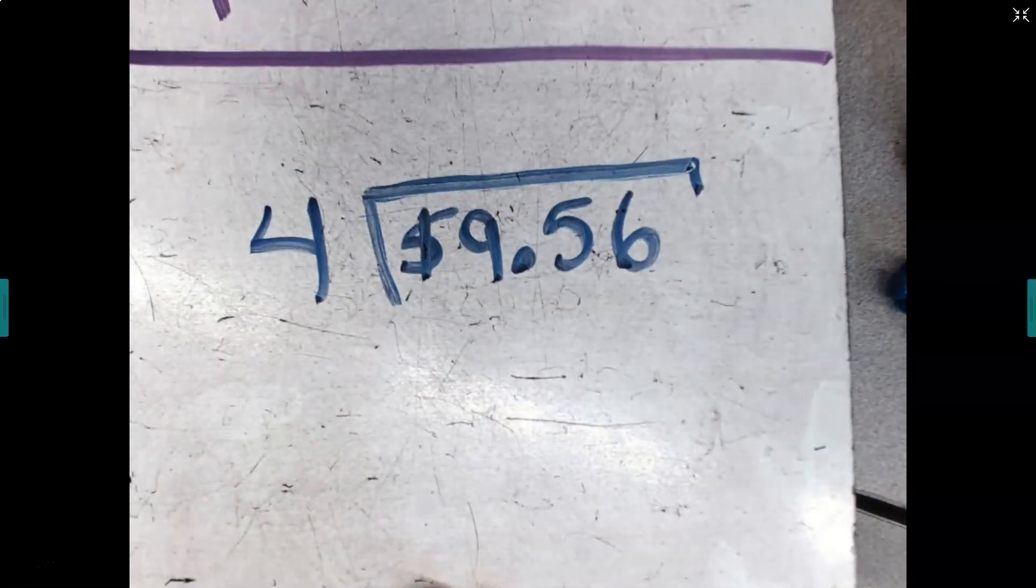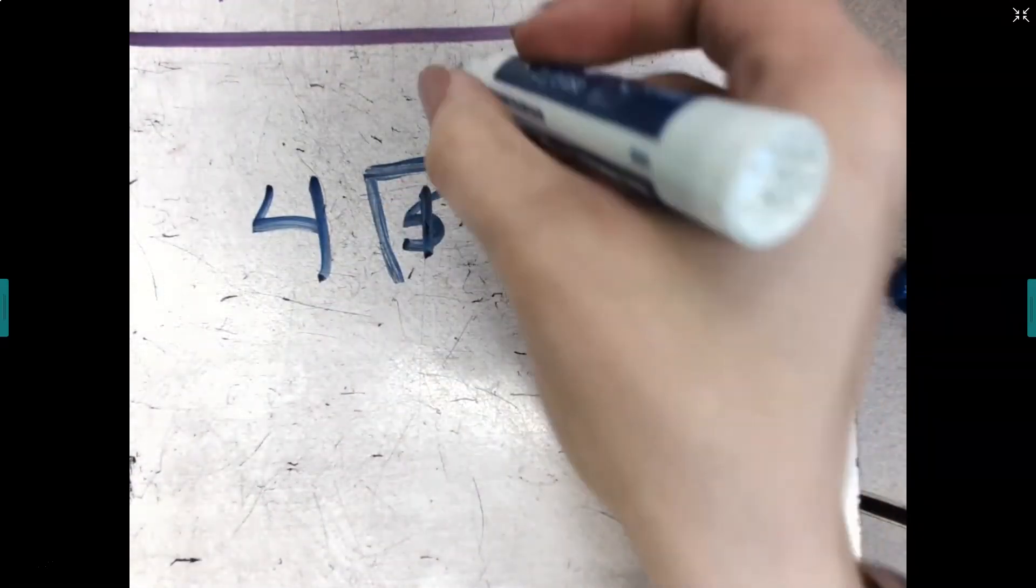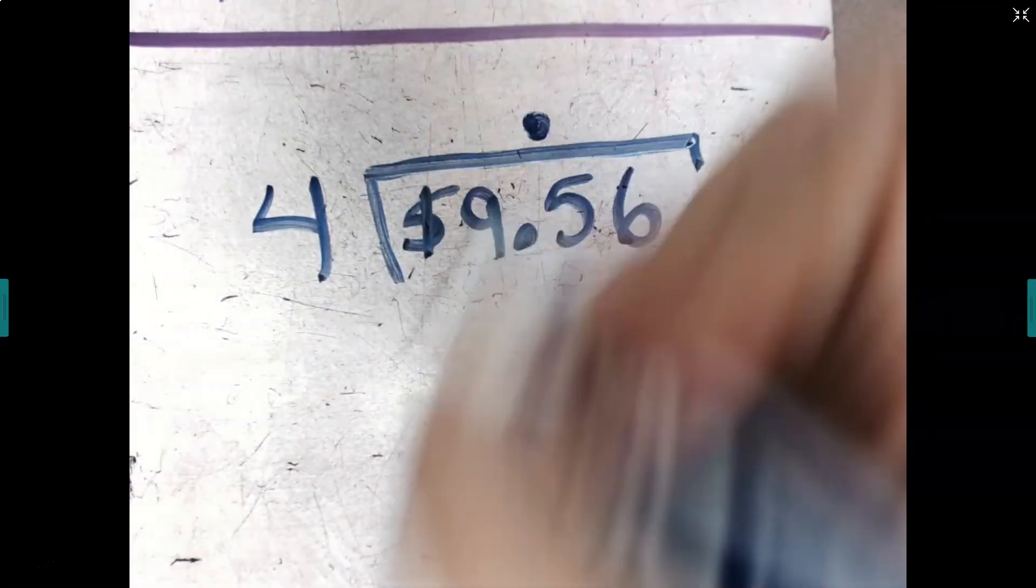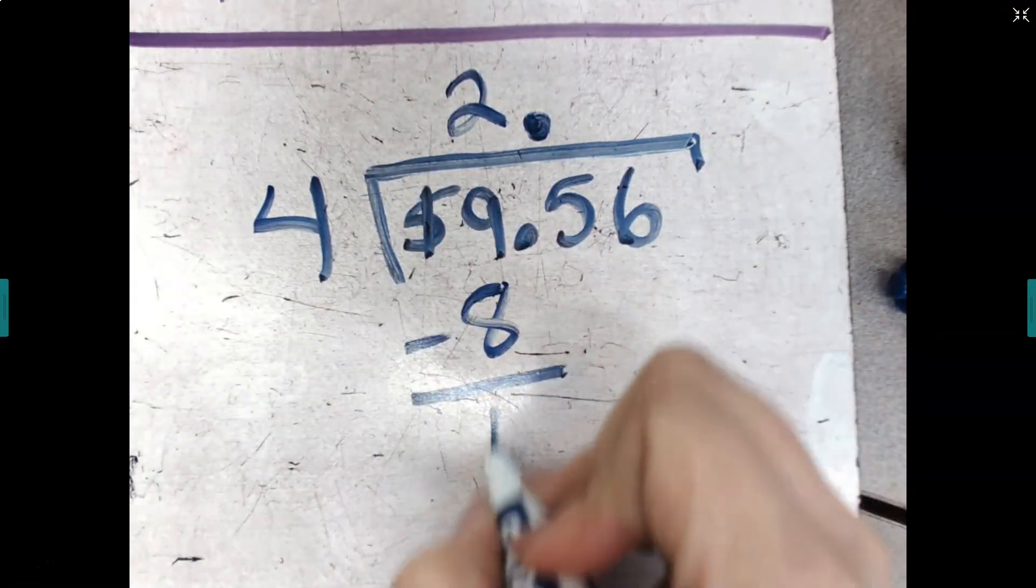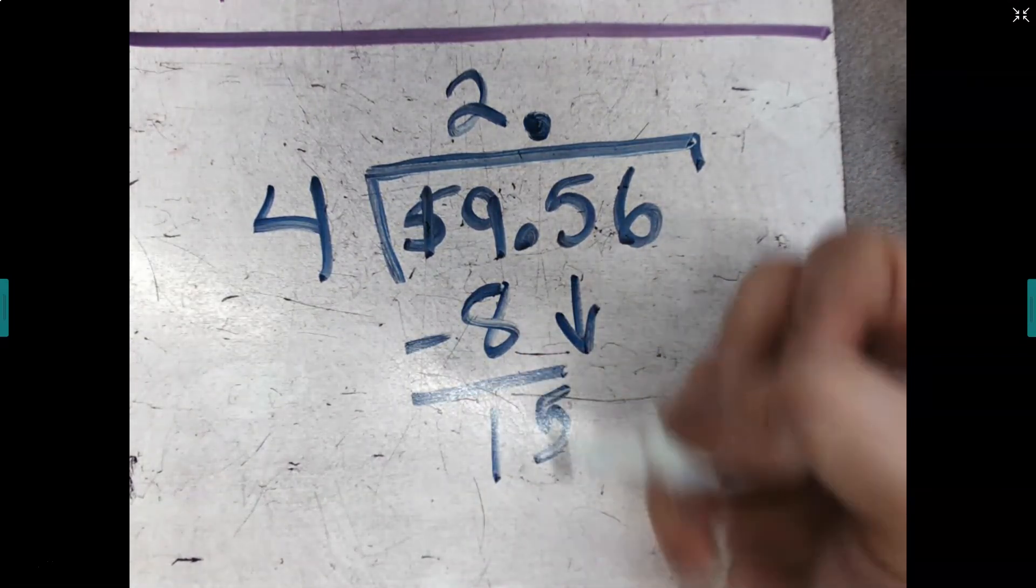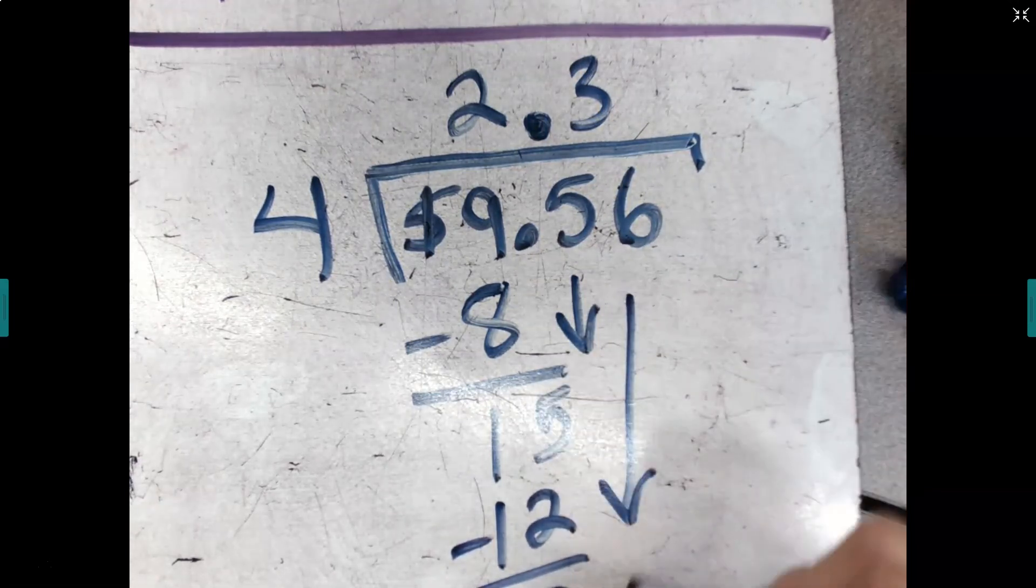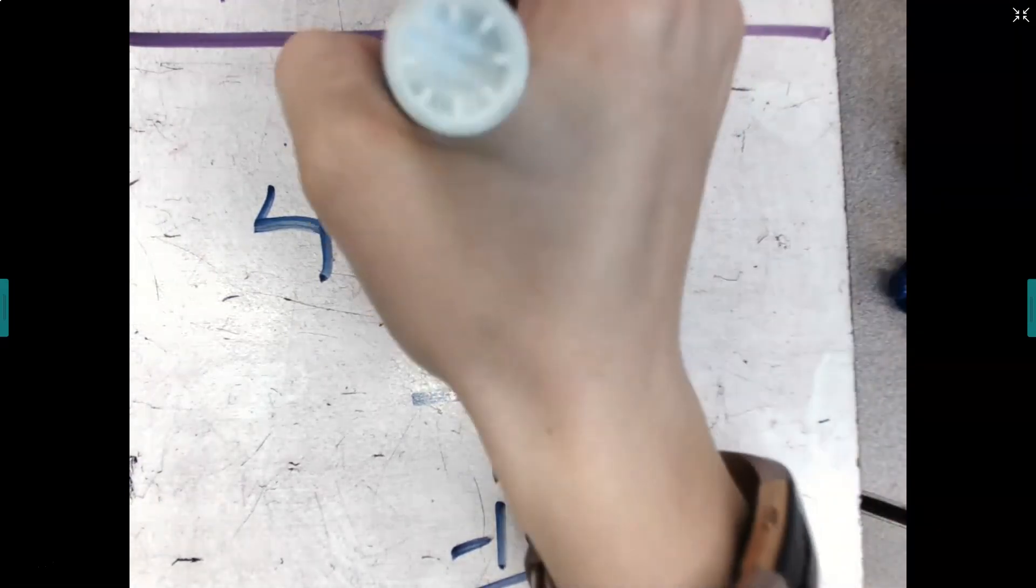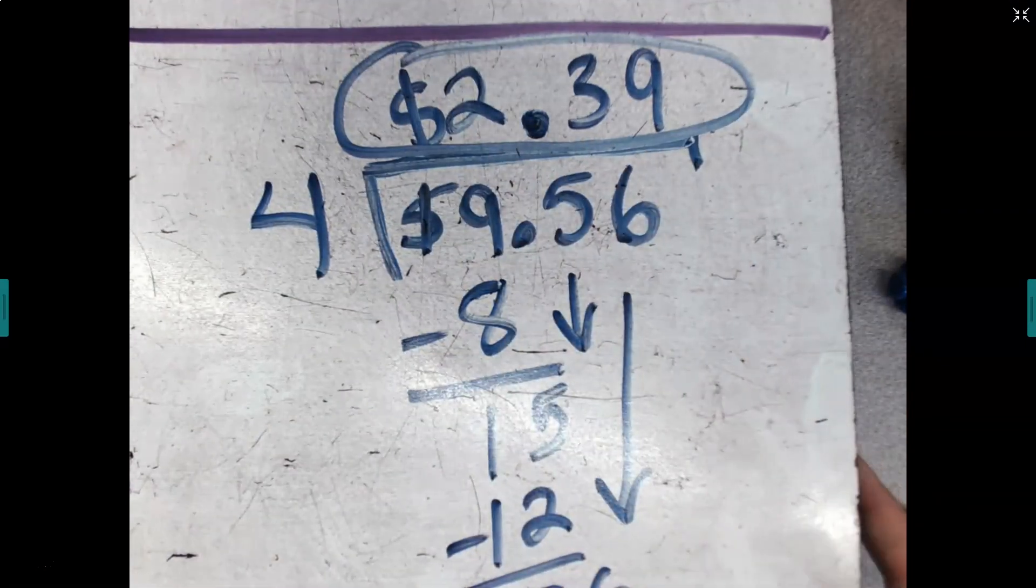So let me go ahead and do this division. I'm finding the price per pound of beef. So I'm just going to start. I like to place my decimal point at the beginning. I'm just going to go ahead and do this division. So this division should be pretty straightforward for us. We've got a single-digit divisor, and not too many complicated things going on. So the price per pound of beef is $2.39.